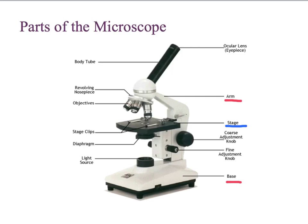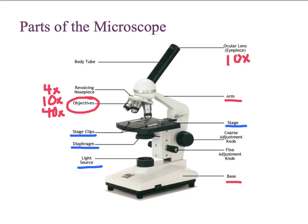The stage is where we place the slide, and the stage clips will hold the slide in place. The light source provides the light for us to see our object, and the diaphragm will adjust the amount of light that hits the stage. The ocular lens will magnify 10 times, and the objective lenses adjust magnification at 4 times, 10 times, or 40 times. The coarse adjustment knob and the fine adjustment knob are our two focus knobs to improve resolution.